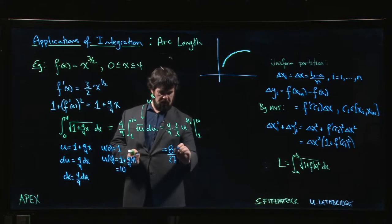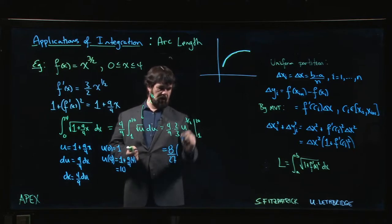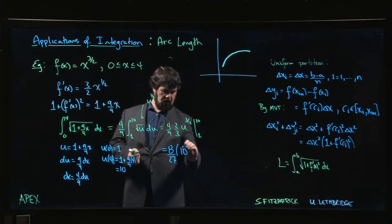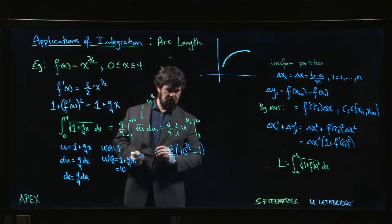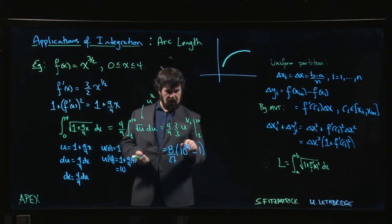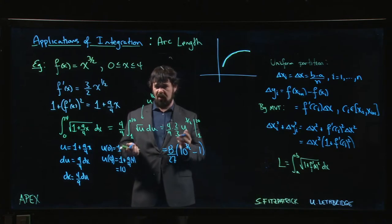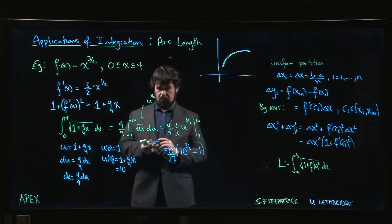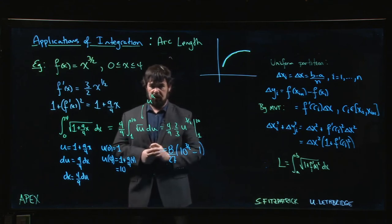Leave it like that, I guess. If you want, 10 to the 3 over 2, you could write it as square root of a thousand if that seems nicer to you, or leave it as 10 to the 3 over 2.